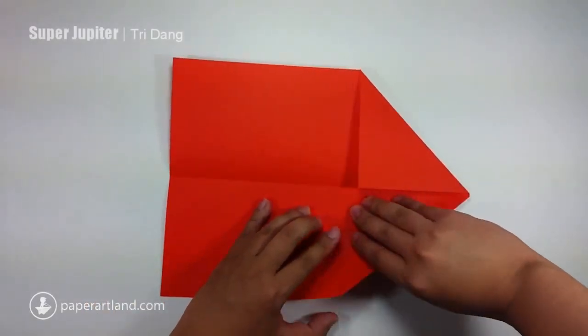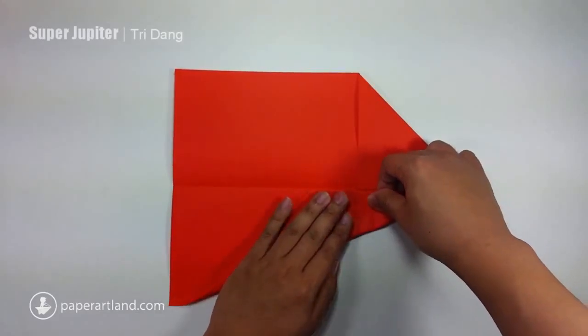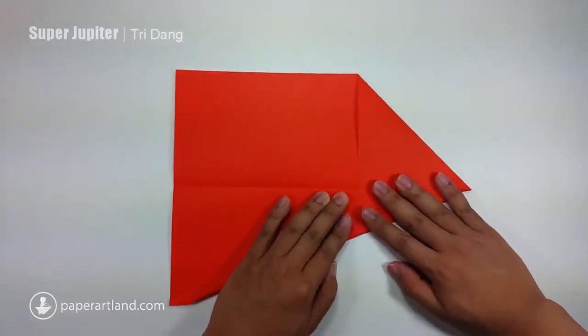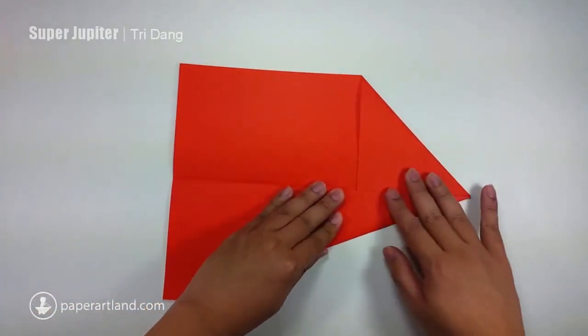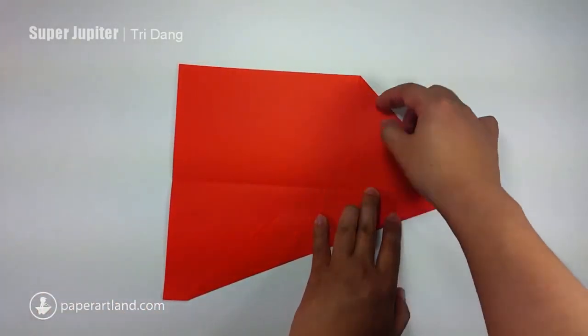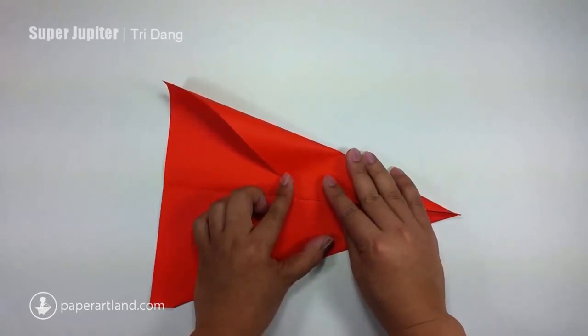Now, start from this edge, fold it to the center crease as well. And repeat the same fold for this side.